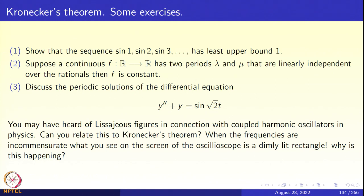For a second example, suppose you have a continuous function f from R to R with two periods lambda and mu, meaning f(x + lambda) = f(x) and f(x + mu) = f(x) for all x. If lambda and mu are linearly independent over the rationals — that is, neither is a rational multiple of the other — then you must show that f is constant. This is another application of Kronecker's theorem.